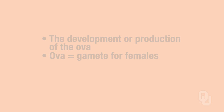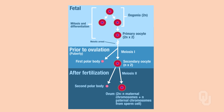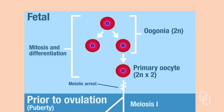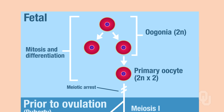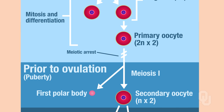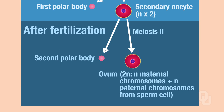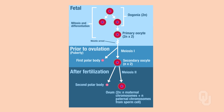Oogenesis actually occurs in three different phases. There's the fetal phase of oogenesis. There's prior to ovulation, which occurs at puberty — so this is what starts at puberty. And then there's the third phase called after fertilization. We're going to work our way through each one of these phases.